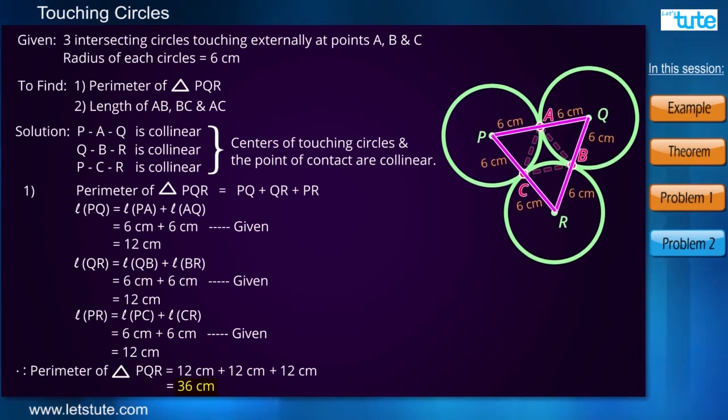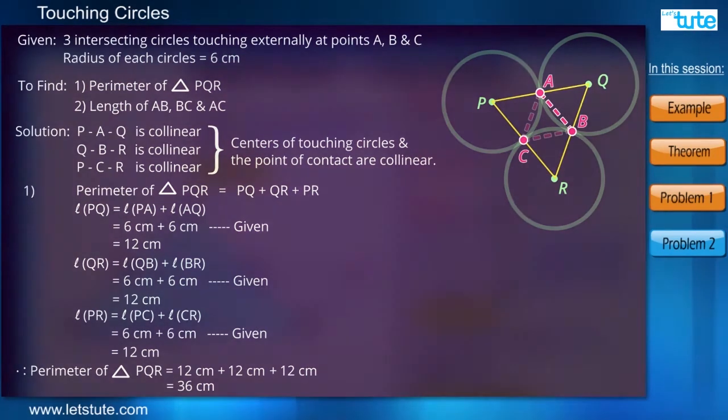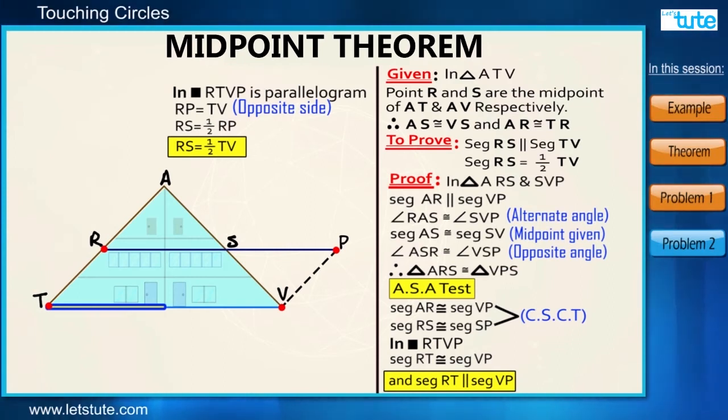Now what we have to do is find the length of AB. Now if we have a look at this particular triangle PQR, point A is the midpoint of the side PQ and point B is the midpoint of the side QR. Now can you remember one of the theorems which will remind you something from the word midpoint? Yes, I am talking about the midpoint theorem. And what does the theorem say?